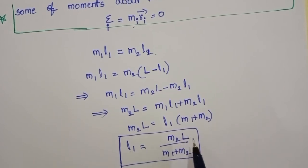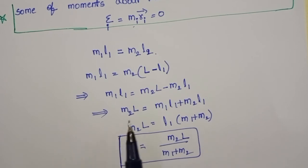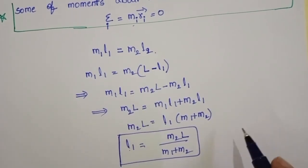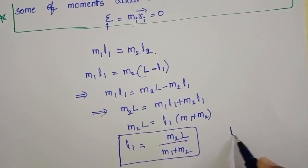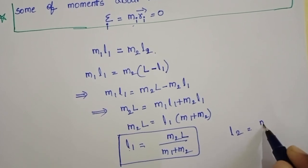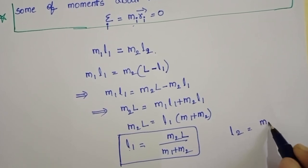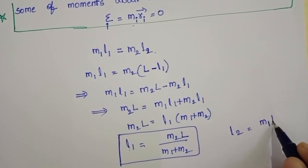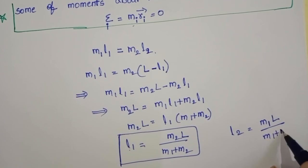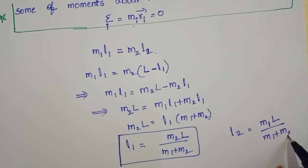Similarly, when the question asks for the position of center of mass from M2, it becomes L2 = M1·L divided by (M1 + M2).